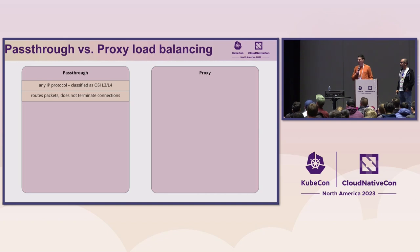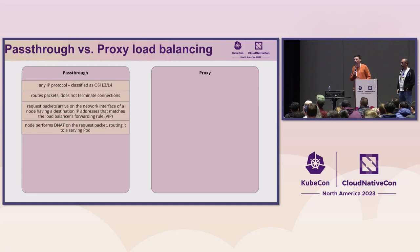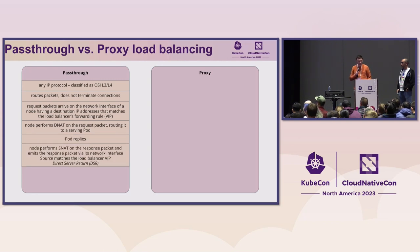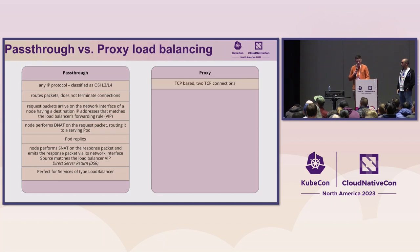A pass-through load balancer also acts as a router — it does not terminate a connection. For TCP, there is just one connection that it routes. Request packets arrive on the network interface of the backend node bearing the destination IP address of the VIP — this is a true pass-through with no DNAT at the load balancer. The node then performs DNAT to the pod IP. The pod replies, and the node performs SNAT, changing the source from the pod's IP back to the load balancer's VIP. This is called direct server return, and it works really well for services of type LoadBalancer — this is how it's done in GKE.